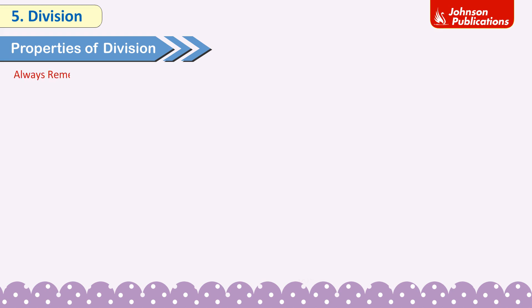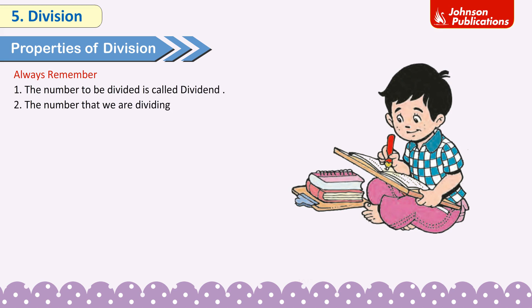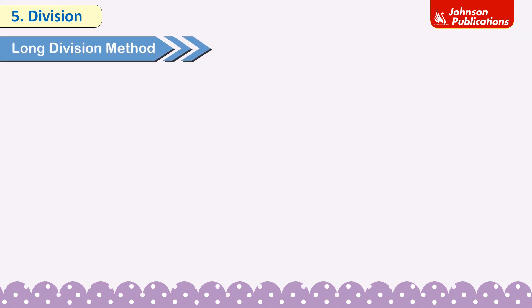Always remember: 1. The number to be divided is called the dividend. 2. The number that we are dividing by is called the divisor. 3. The answer obtained in division is called the quotient. Long division method: Division of a 2-digit number by a 1-digit number without remainder.